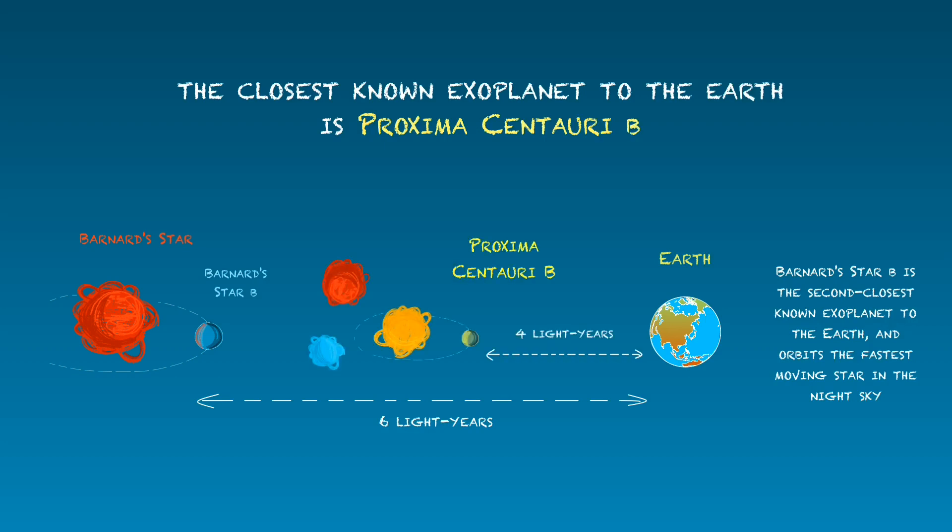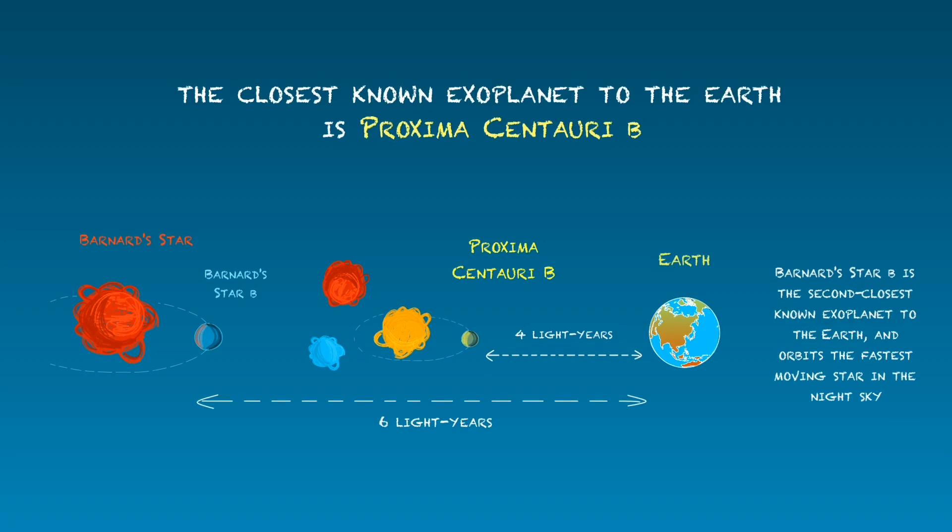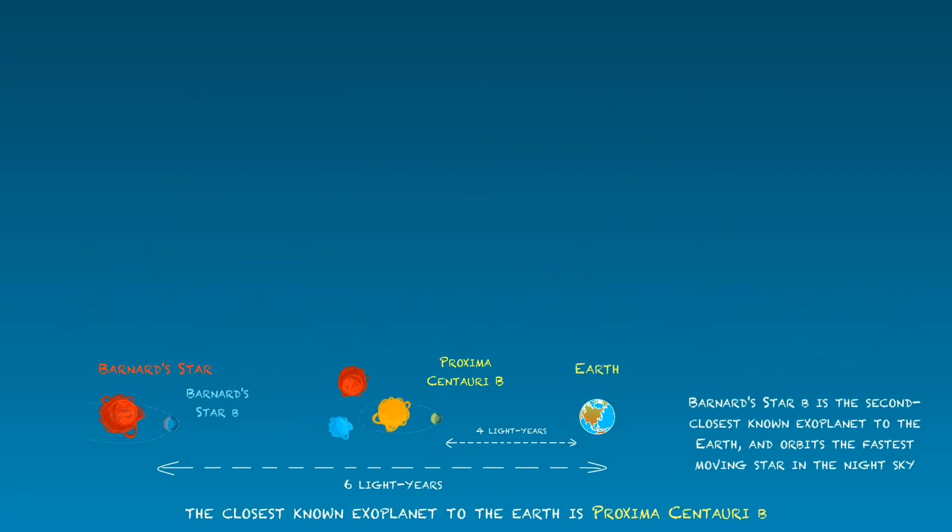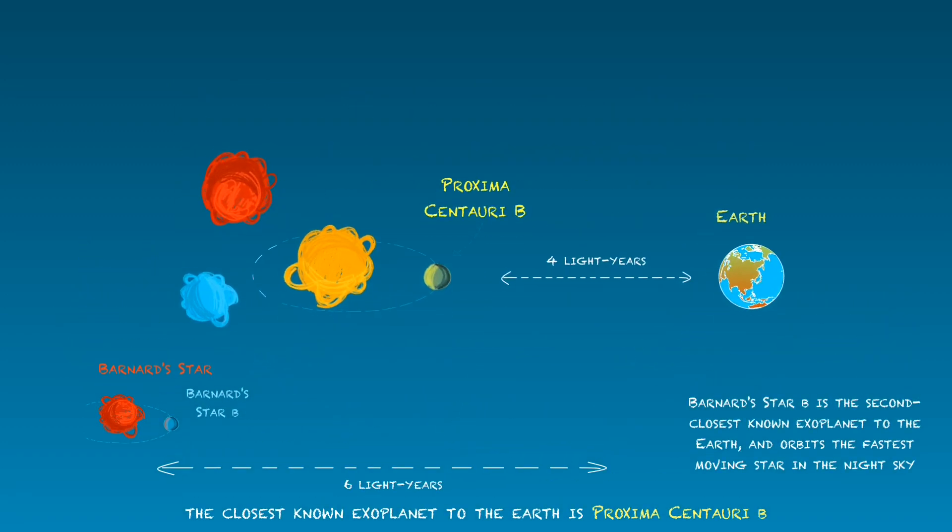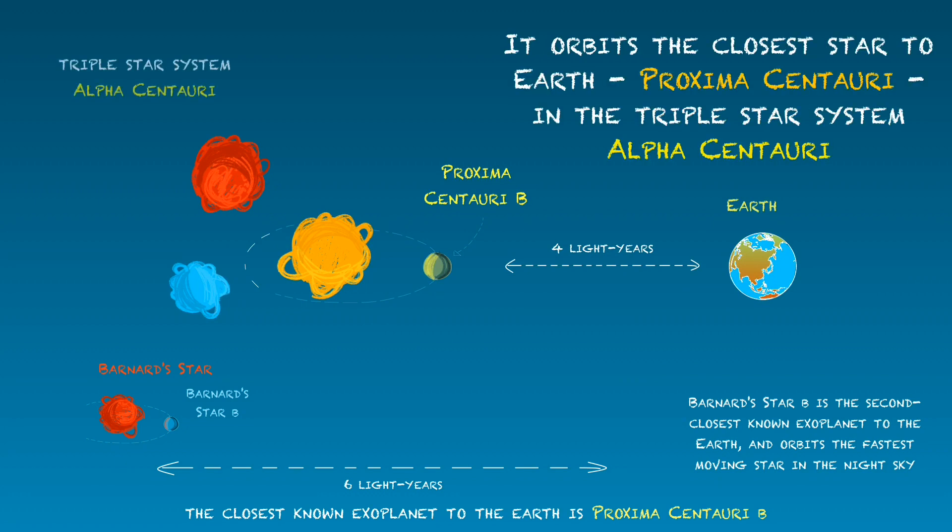In 2016, astronomers using ESO telescopes and other facilities found clear evidence of a planet orbiting the closest star to Earth in the system, Proxima Centauri. That planet lies just over 4 light years from Earth.